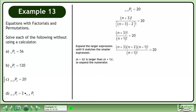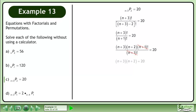Expand the larger expression until it matches the smaller expression. (n+3) factorial is larger than (n+1) factorial, so expand the numerator. Cancel (n+1) factorial from the numerator and denominator.